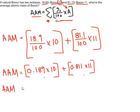So 0.189 times 10 is 1.89, and we'll add up 0.811 times 11 is 8.921. And when we add that up, we get 10.81 atomic mass units.